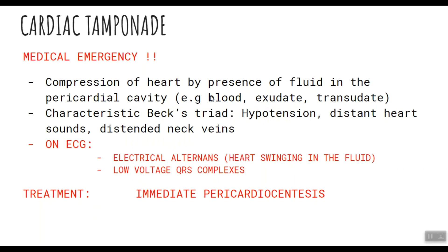Keep in mind that cardiac tamponade is a very serious condition. It results from compression of the heart by excessive fluid in the pericardial cavity, making the heart unable to contract properly. A high-yield fact is that on physical exam it shows Beck's triad: hypotension, distant heart sounds, and distended neck veins. On ECG, you'll see electrical alternans because the heart is swinging in the fluid, and of course low voltage QRS complexes as well.